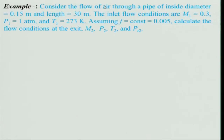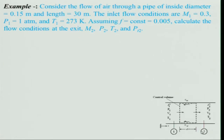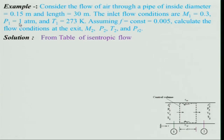Let us now take an example: consider the flow of air through a pipe of inside diameter 0.15 m and length 30 m — quite a large length. Inlet flow condition: M1 = 0.3 (subsonic), P1 = 1 atm, T1 = 273 K. We assume friction factor F = 0.005 as constant. Calculate the flow conditions at the exit (station 2): find M2, P2, T2, and PT2. Given M1, P1, and T1, we note M2 is unknown.